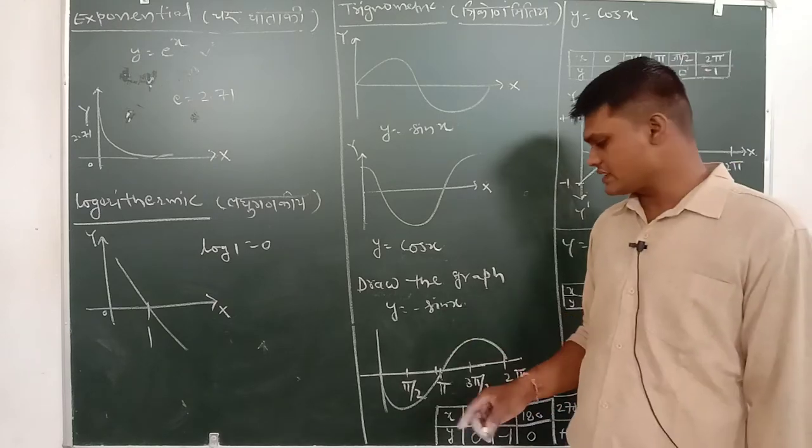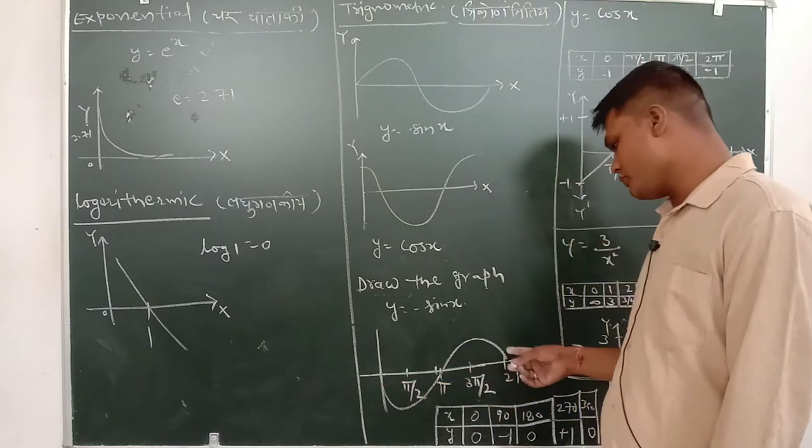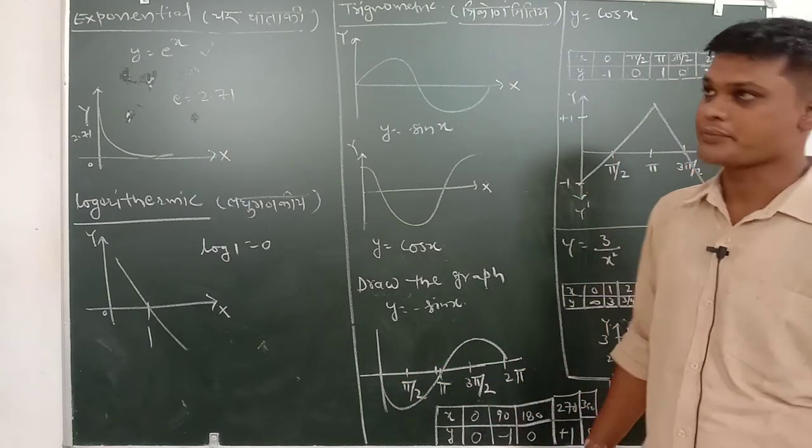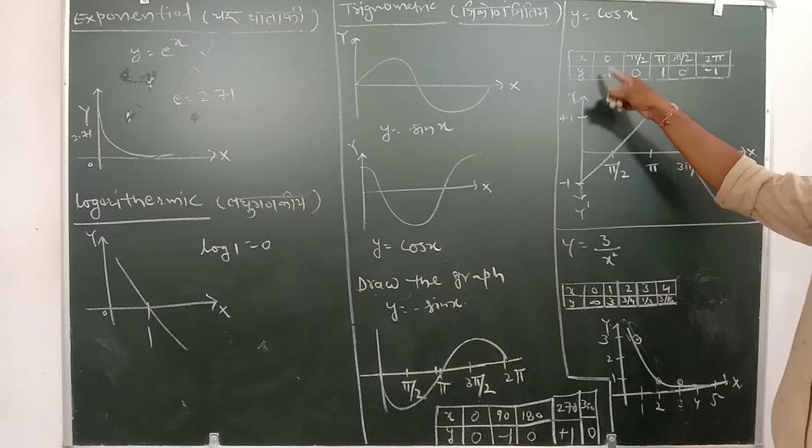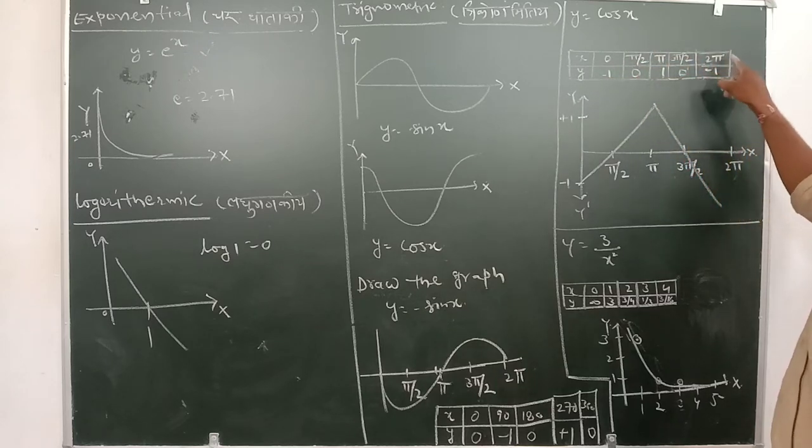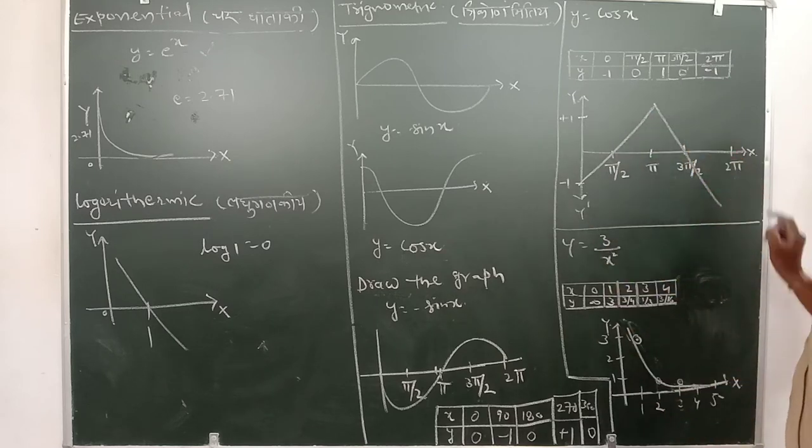is equal to minus 1. This graph equals 0. For cos x, when x equals 0, y equals 1; pi by 2 equals 0; pi equals minus 1; 3 pi by 2 equals 0; and 2 pi equals 1. This graph is this way.